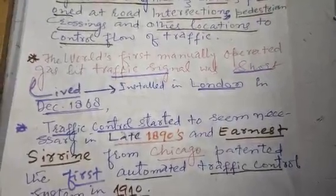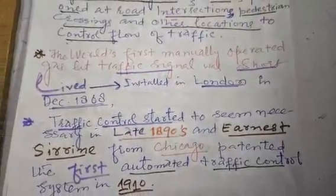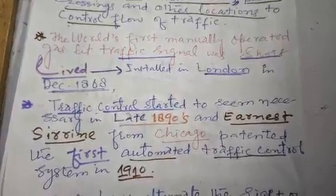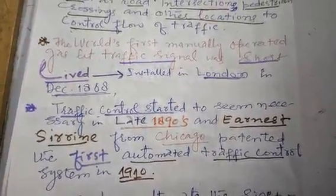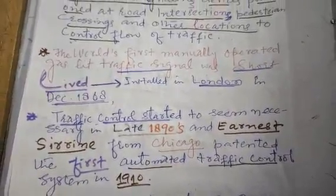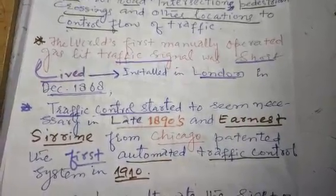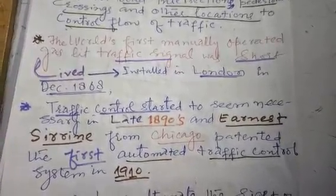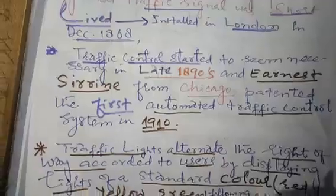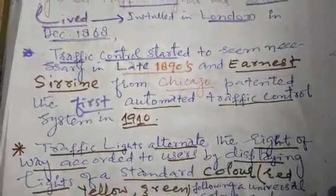Ernest Sirrine from Chicago patented and discovered the first automated traffic control system in 1910. So the first proper automated traffic control system was developed by Ernest Sirrine from Chicago in 1910.